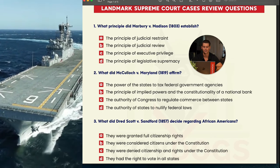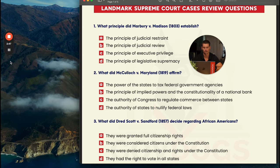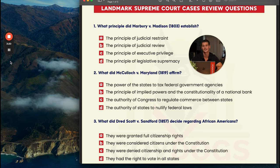Number three: what did Dred Scott v. Sanford decide regarding African Americans? A says they were granted full citizenship, B says they were considered citizens, C says they were denied citizenship, and D says they had the right to vote in all states. A, B, and D all imply citizenship, while C says they aren't citizens. Under Dred Scott, African Americans were actually denied citizenship under the Constitution. The answer is C.